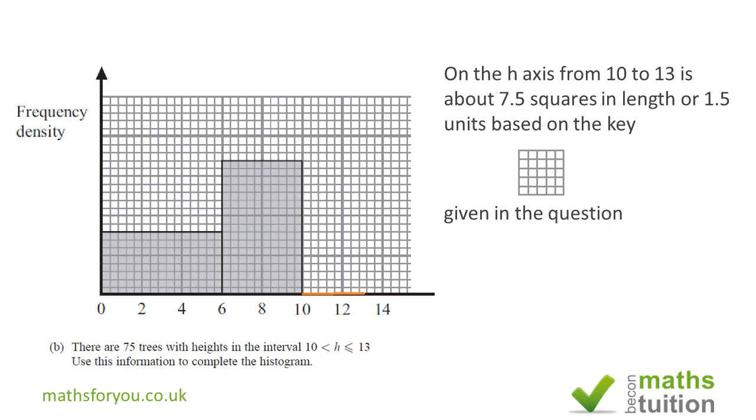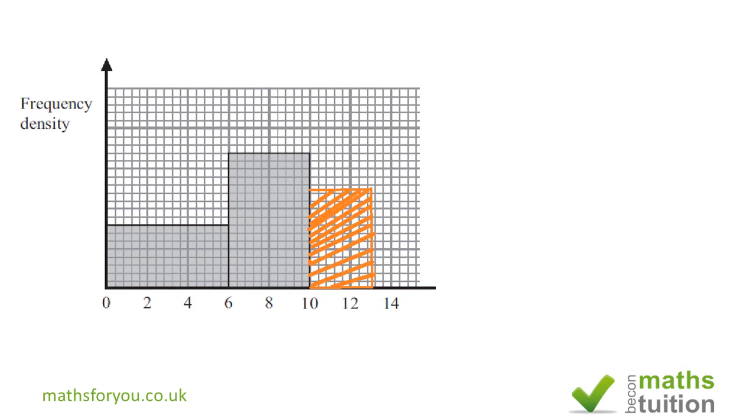Now we need to find the vertical height of this area occupied by the 75 trees, not forgetting that this area will be equivalent to 3.75 unit areas. Now we've got this horizontal length of 1.5, so we need to find the vertical length there.